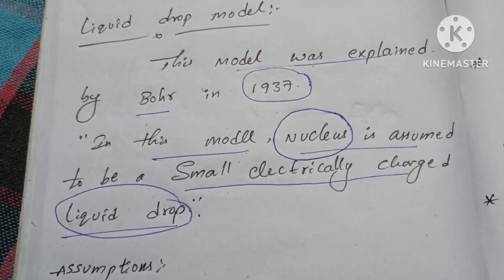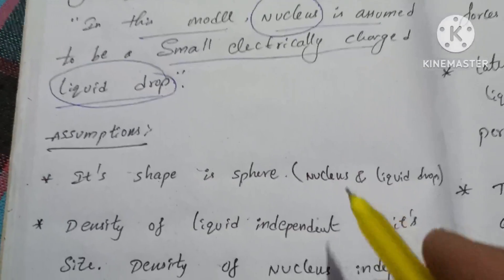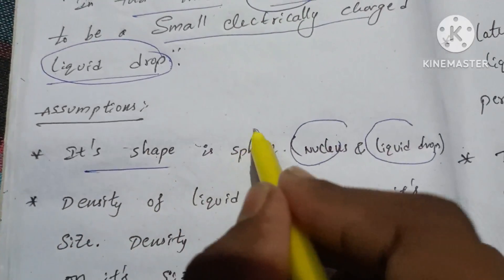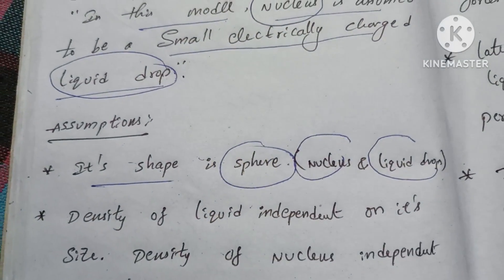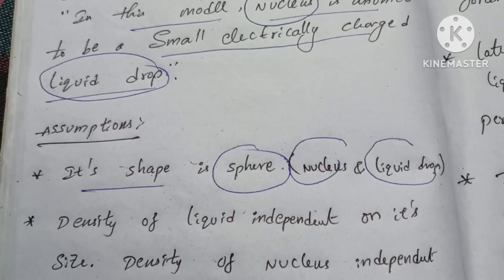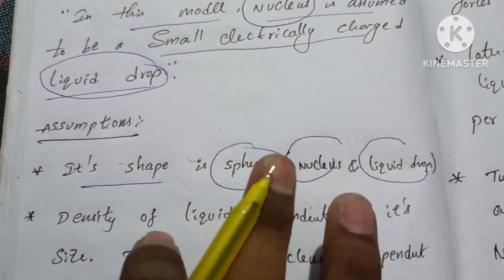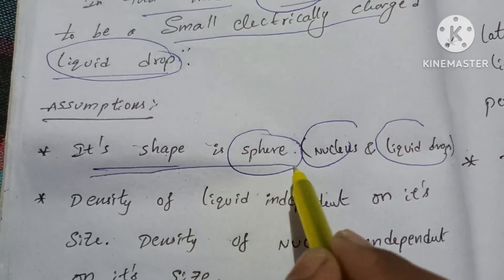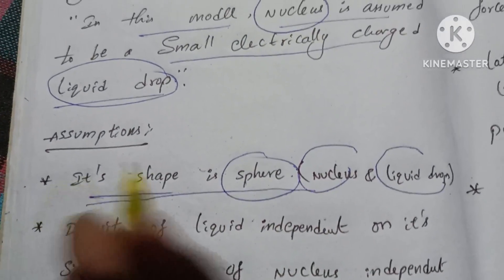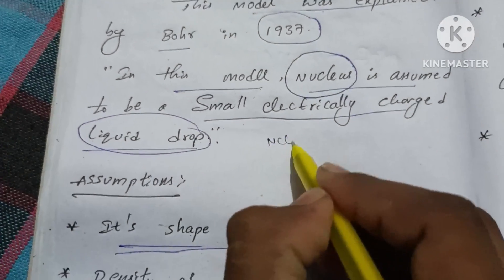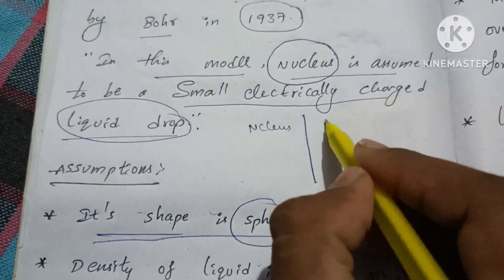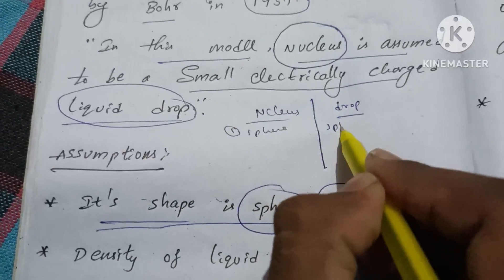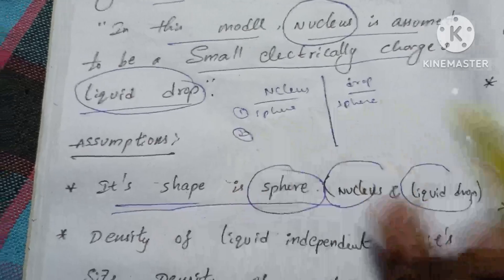If you compare the nucleus to the liquid drop model, you will compare it with a small electrically charged drop. This is the first similarity.